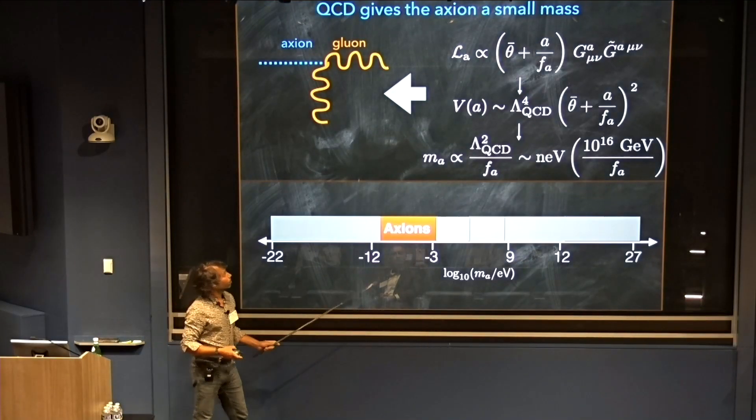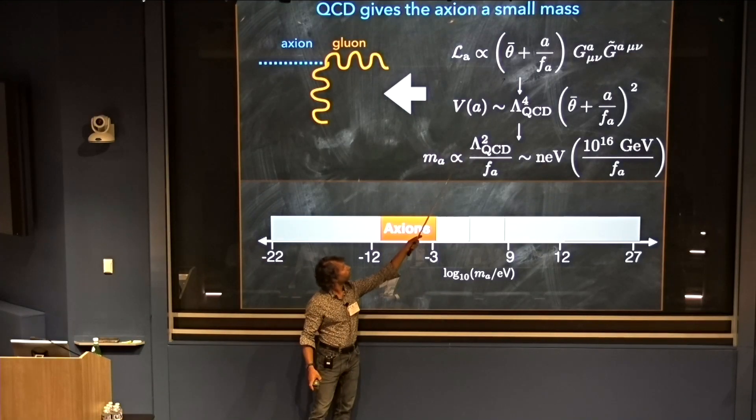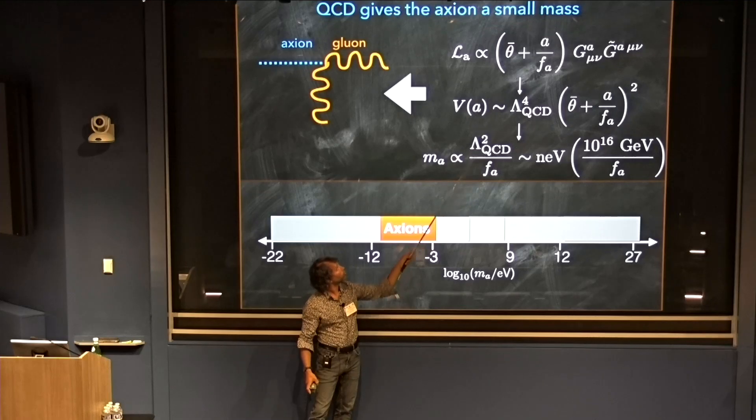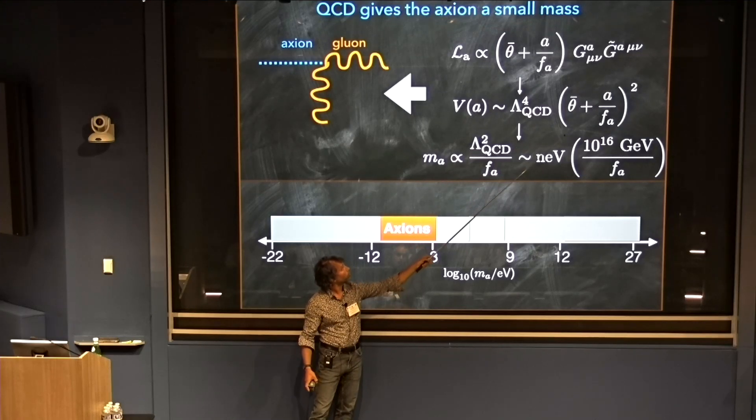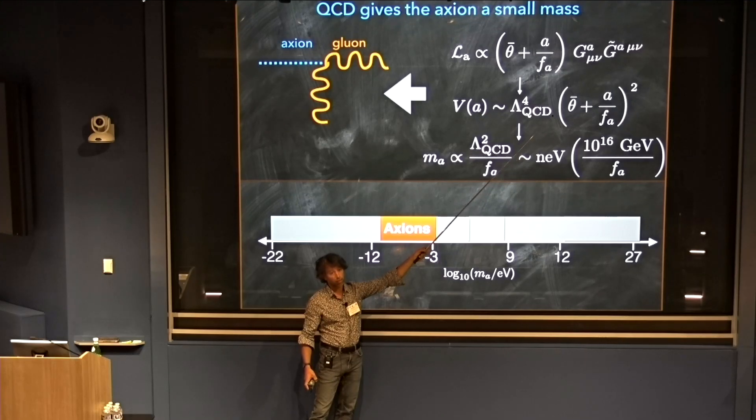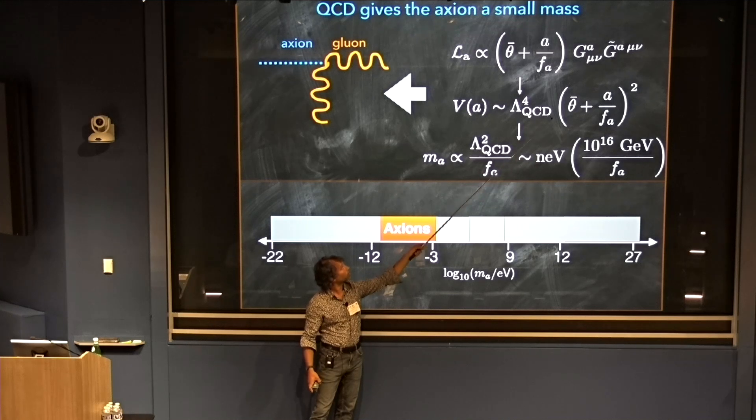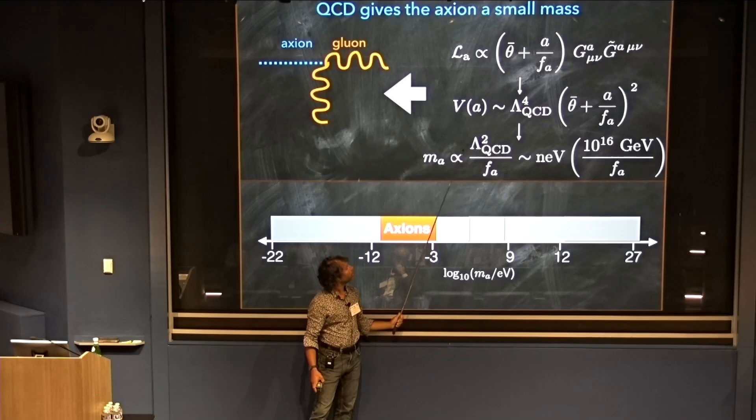More precisely, what happens is that this term, in the presence of non-perturbative QCD effects, you get a contribution to the axion potential. And when the axion minimizes its potential, it zeroes out the neutron electric dipole moment. This is just the mathematical version of that picture I showed you before. But now, if you expand this potential, you'll see there's a quadratic term in the axion which gives you a mass for the axion. And as I mentioned before, that mass is inversely proportional to this scale F_A, such that if F_A becomes larger, the mass becomes smaller.